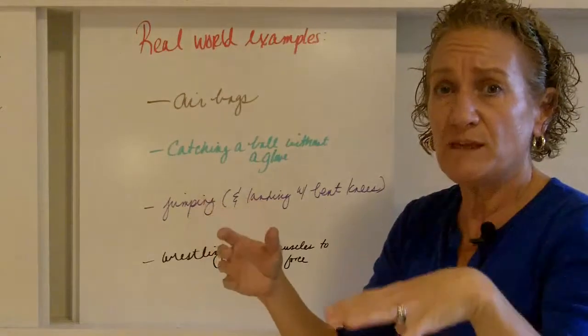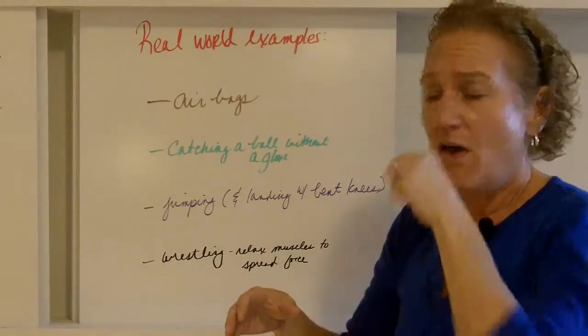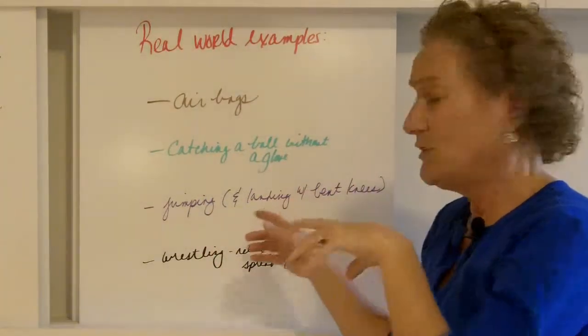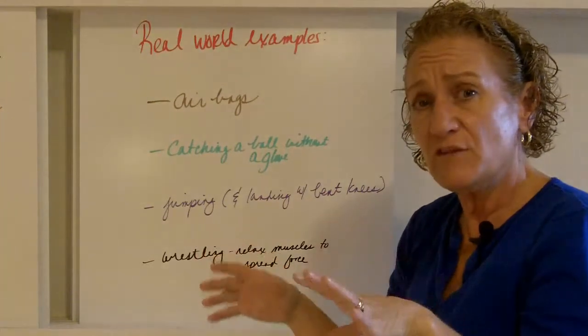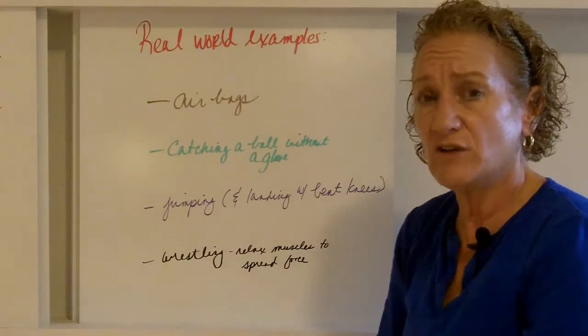Jumping. If you jump off of something and you're going to land on solid ground, you want to land with your knees bent. If you land with your knees bent, there's less chance of getting injured.